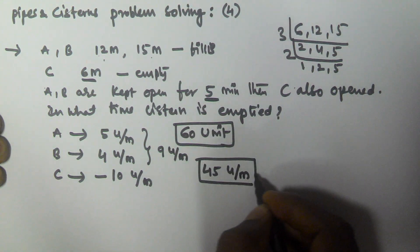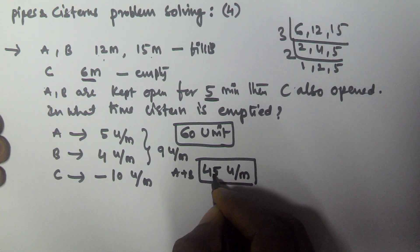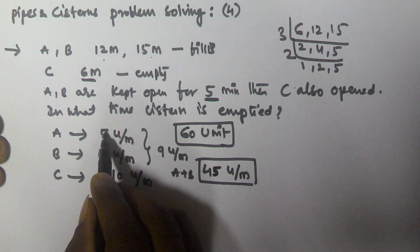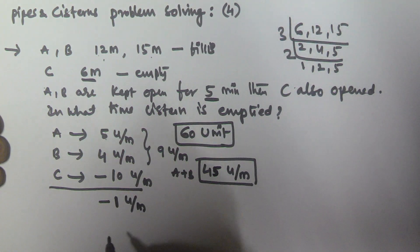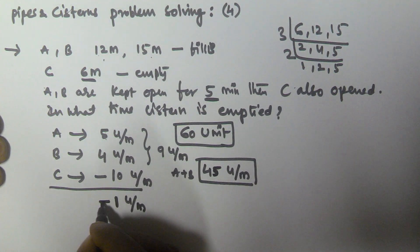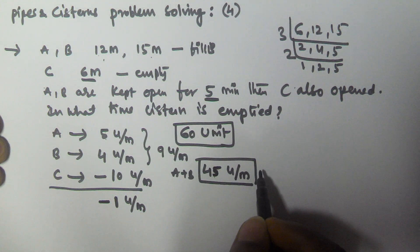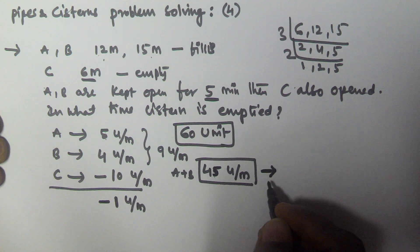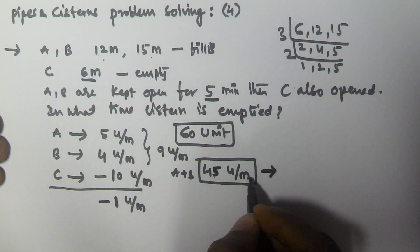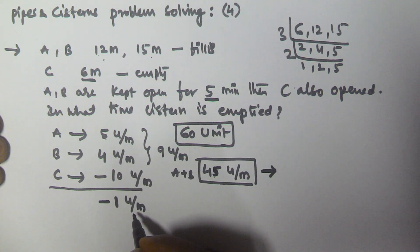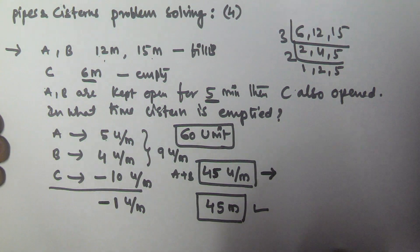45 units are filled by A and B together in the first 5 minutes. After that, C is also opened. With all three open, the resultant is 5 + 4 − 10 = −1 unit per minute. The negative sign means the tank is being emptied. Since 45 units are available in the tank and the net rate is 1 unit per minute being emptied, it will take 45 minutes to empty the tank.